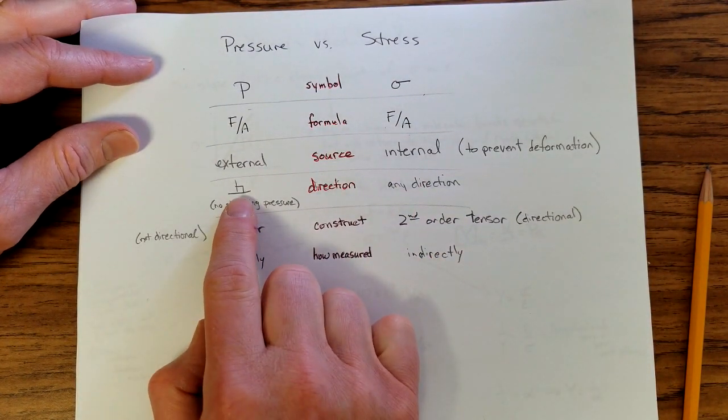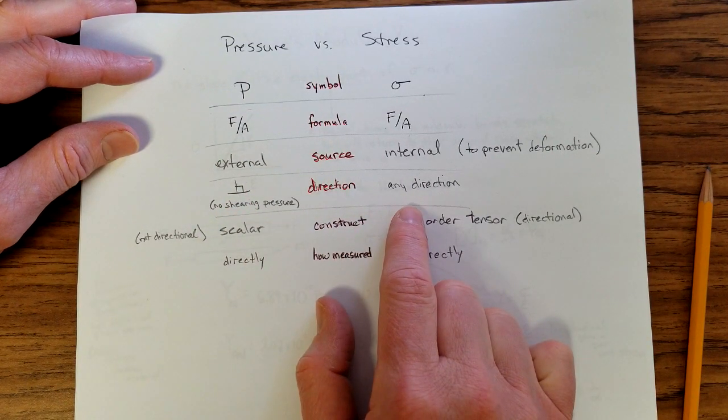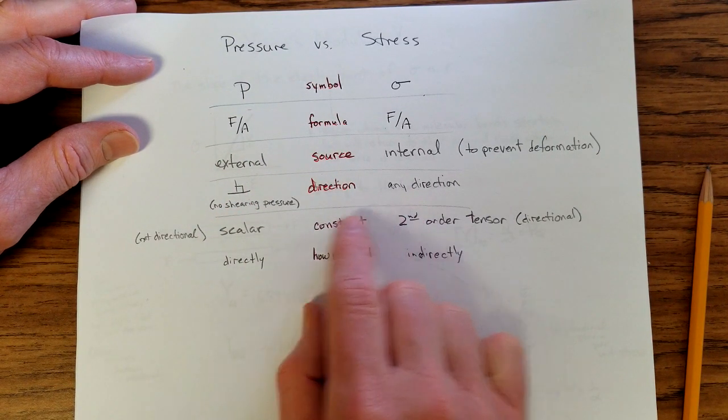Pressure is always perpendicular, where stress doesn't have to be. I can have a shearing stress. There is no shearing pressure.